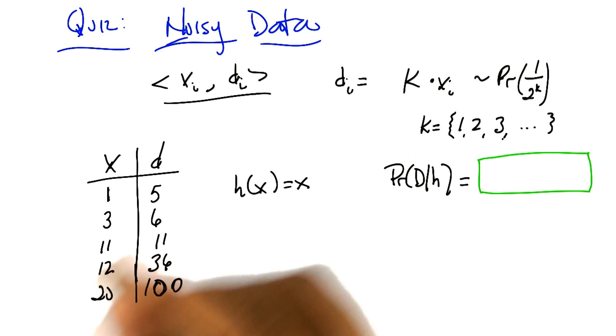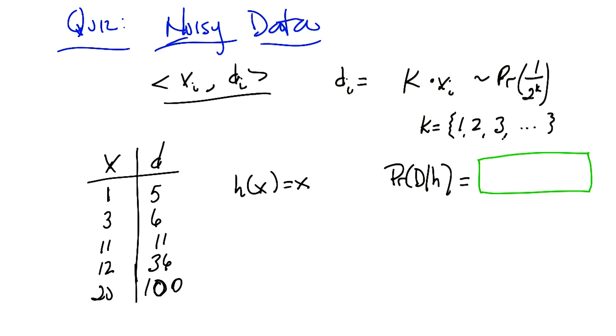Okay, so I've got a bunch of training data, x_i, d sub i. And here's how the true underlying process sort of works. So given some particular x sub i, you get a label, d sub i, which is equal to k times x of i, where k is some number.